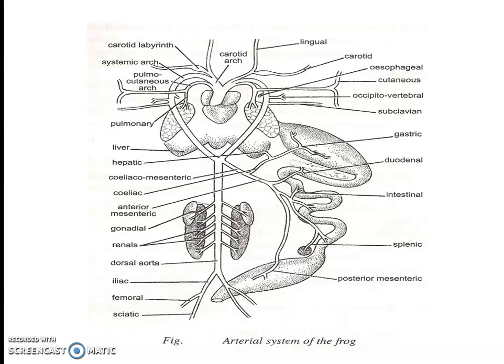This is the pulmo-cutaneous trunk. The pulmo-cutaneous trunk divides into the pulmonary artery, which goes to the lung, and the cutaneous artery, which goes to the skin.